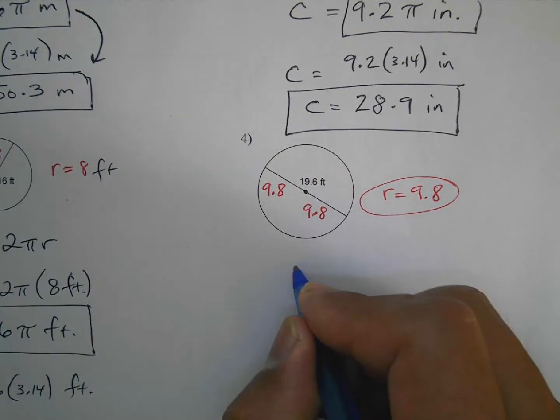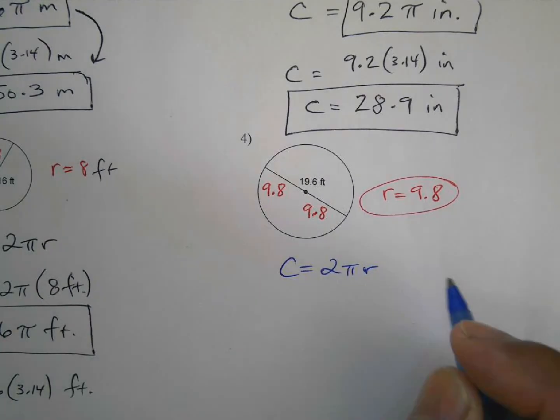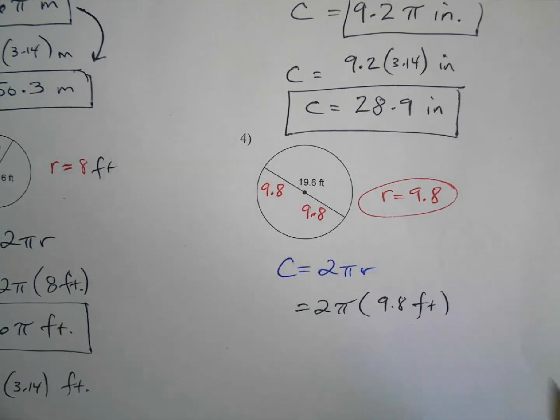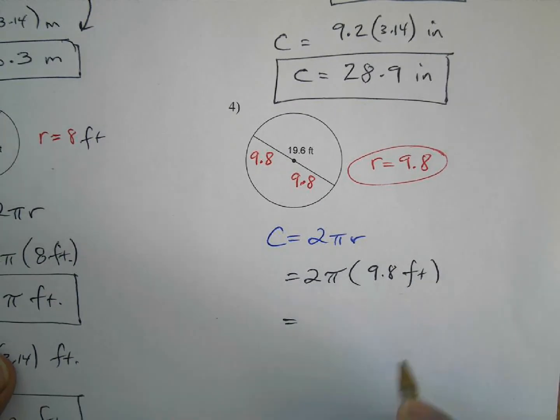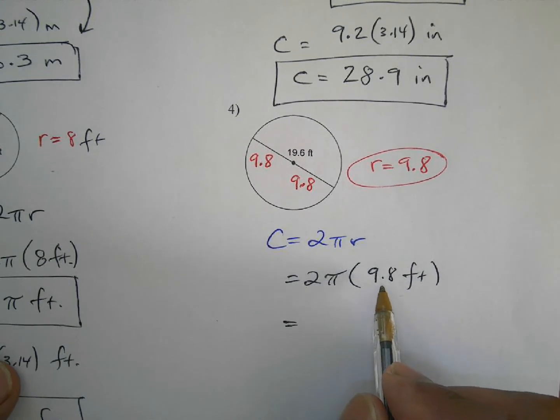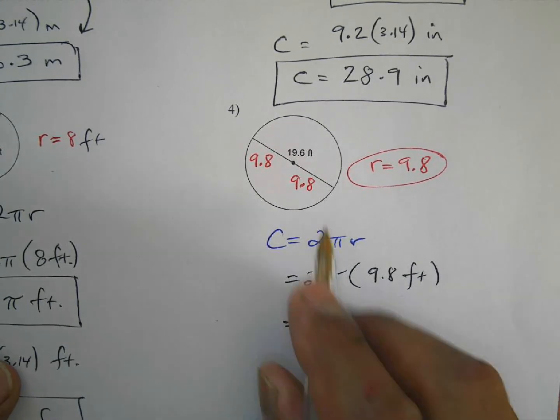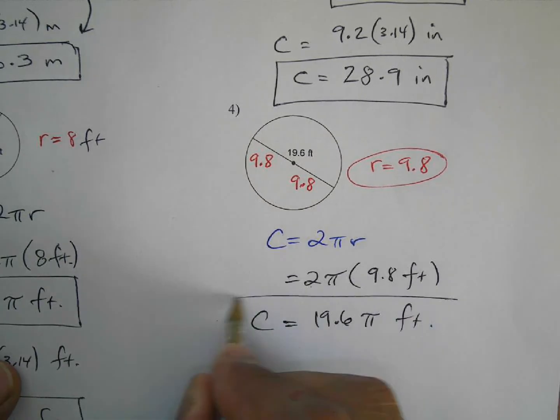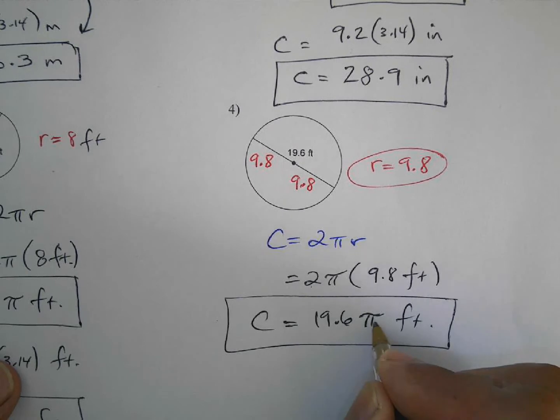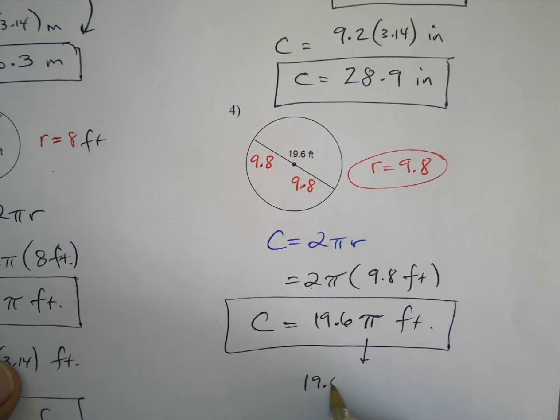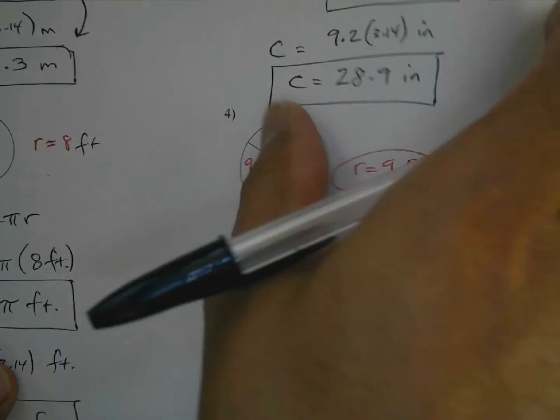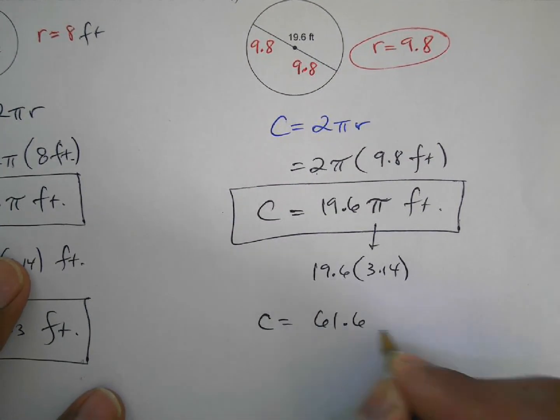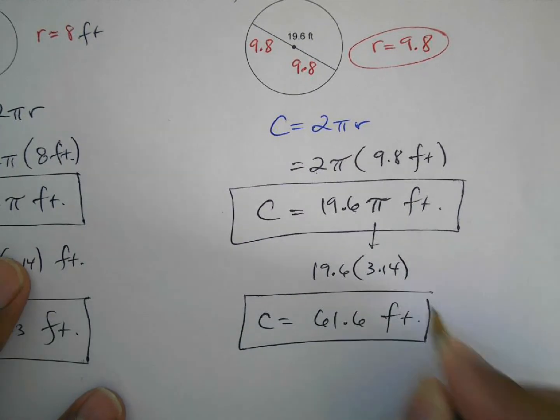Okay. The formula is C is equal to 2 pi r. That's going to be 2 times pi times r is what? 9.8 feet again. So, that's going to be, multiply the numbers, 9.8 times 2, well, it's 19.6, 19.6 pi feet. This is one form of the answer with the pi. But they want us to multiply and do 19.6 times, use that button on your calculator, pi 3.14. So, you should get for this one, the circumference is 61.6 feet.